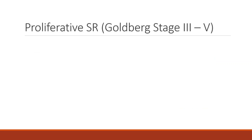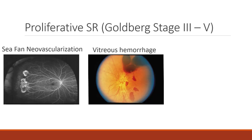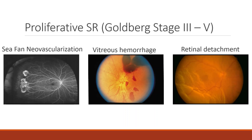Proliferative sickle cell retinopathy includes the more advanced Goldberg stages, including the stage 3 finding of pre-retinal sea-fan neovascularization that occurs at the peripheral border. These sea-fans form from local ischemia and upregulation of VEGF. A way to differentiate between sickle cell retinopathy and proliferative diabetic retinopathy is that sickle cell retinopathy is more peripheral, and neovascularization auto-infarcts in sickle cell retinopathy, leading to the classic white sea-fan appearance. Uncontrolled neovascularization can lead to vitreous hemorrhage and tractional retinal detachment, which are vision-threatening complications.